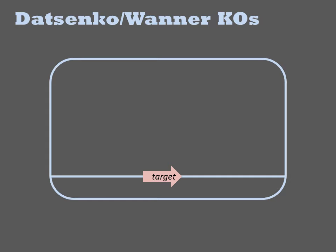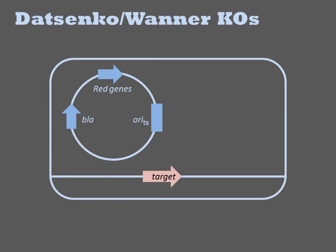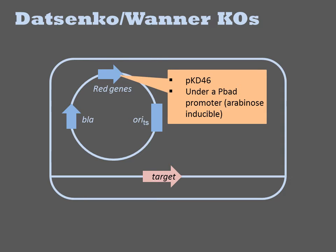It is a lambda red-based method for knocking out genes in the genome. It begins with pretty much any E. coli strain containing the target sequence we wish to remove. The cell is first transformed with a helper plasmid called PKD-46, and it's grown at the permissive temperature of 30 degrees. This temperature-sensitive plasmid encodes the lambda red genes under a PBAD promoter. Growth of the cells with arabinose present will induce expression of this cassette, resulting in the production of lambda red and the enhancement of homologous recombination in the cell.